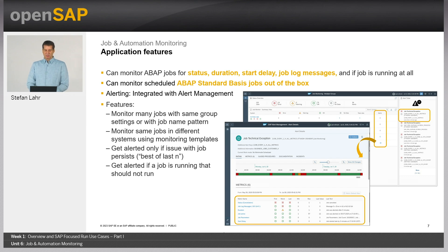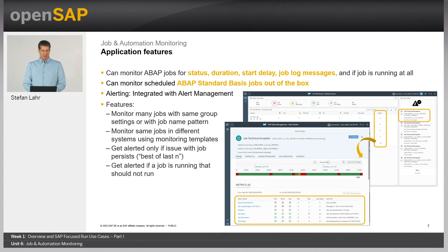Further features include monitoring many jobs with the same group settings or with a job name pattern. You can monitor the same jobs in different systems using monitoring templates, and you can be alerted only if an issue with the job persists — selecting the best of last N executions as a criteria for alerting. You can also get alerted if a job is running that should not run — a kind of negative reporting alerting.